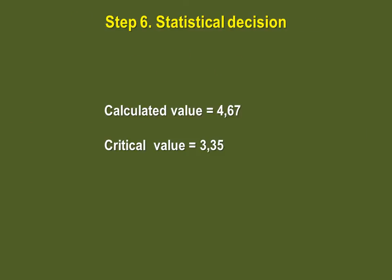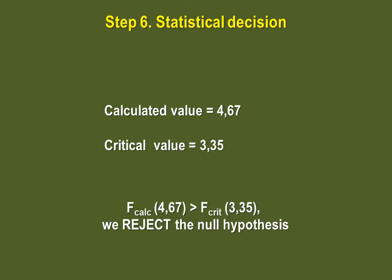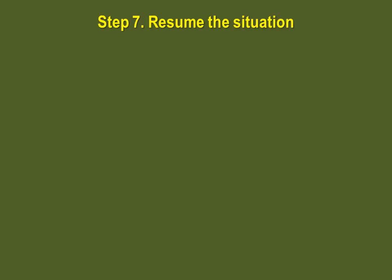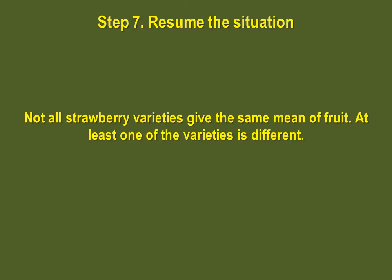We can move forward to the statistical decision. So, remember our calculated F value was 4.67. And our critical value is 3.35. Now, because our calculated value is higher than the critical value, we reject the null hypothesis. This lets us state that at least one of the varieties of strawberries does not, on average, give the same amount of fruit.